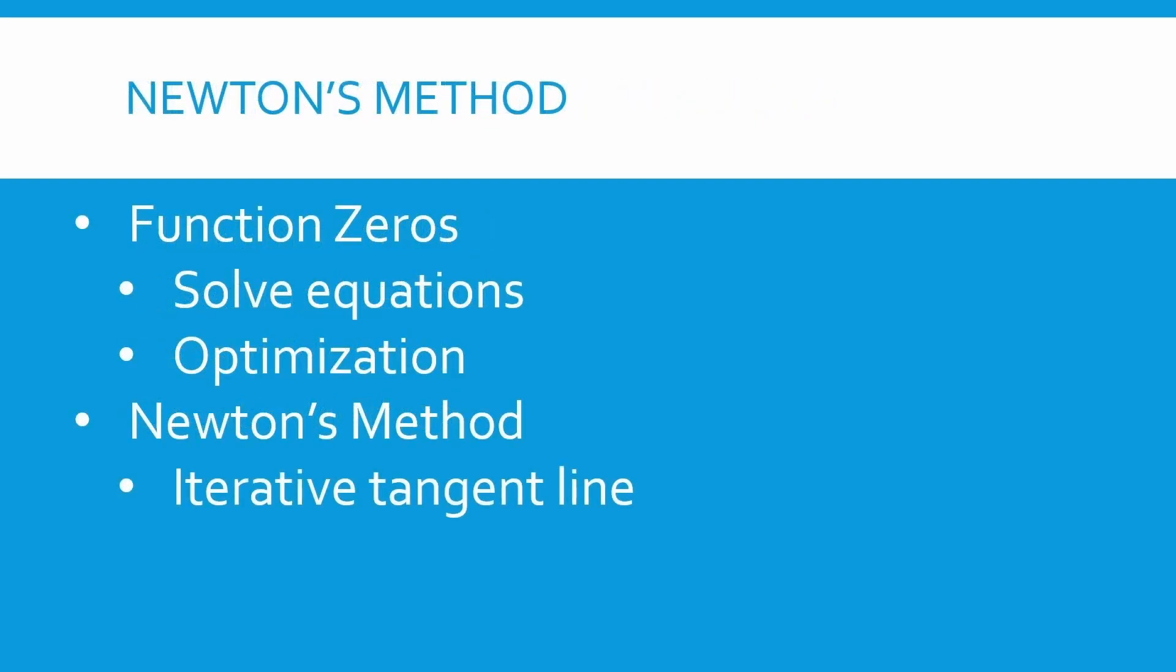To summarize, finding the zeros of a function is useful for solving equations and optimization, among other things. Newton's method is an algorithm for finding the zeros, or roots, of a function, which works by iteratively taking a tangent line to the function.